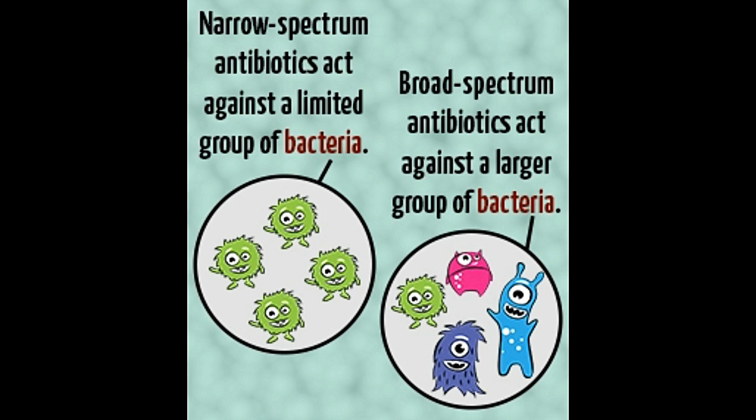Other broad spectrum examples include amoxicillin, gatifloxacin, levofloxacin, and streptomycin. Uses — Narrow Spectrum: One cannot rule out the possibility of bacteria becoming resistant to narrow spectrum antibiotics, as these types target only a specific group of bacteria. Broad Spectrum: These are designed to attack a larger group of bacteria, so they are particularly useful in treating diseases caused by bacteria that are resistant to narrow spectrum antibiotics.